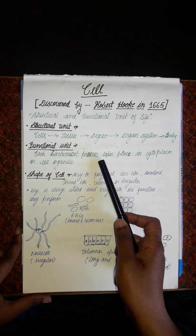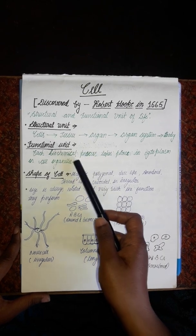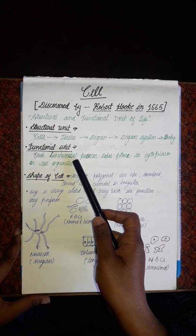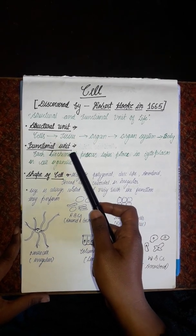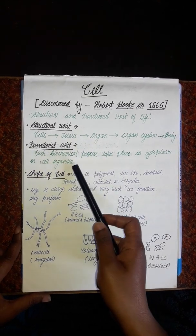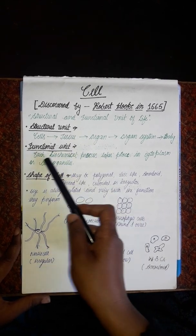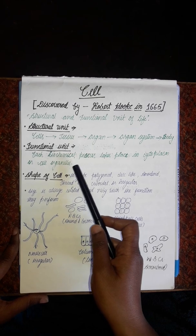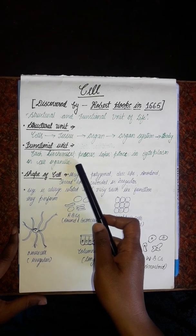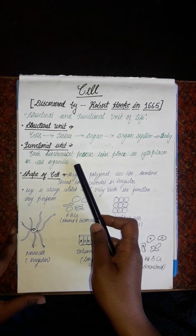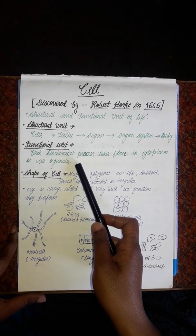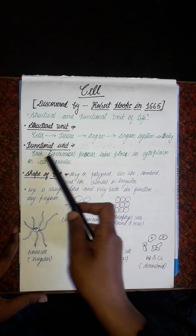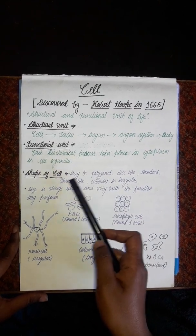We can say that the cell is the functional unit of life because each and every biochemical process takes place inside the cell or cell organelles. Cell organelles are the small structures present inside the cells.